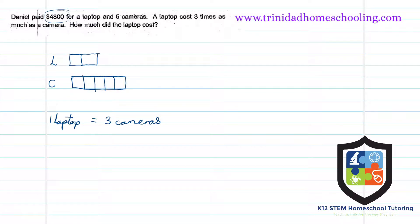All right, so if one laptop in terms of cameras is equal to three, right, so in all we have three cameras plus this five to give us eight. Okay, so one, two, three, four, five, six, seven, eight. Right, now this eight cameras is equal to sum of $4800.